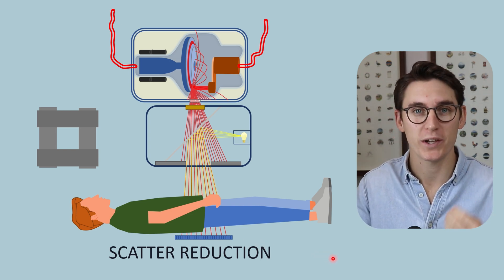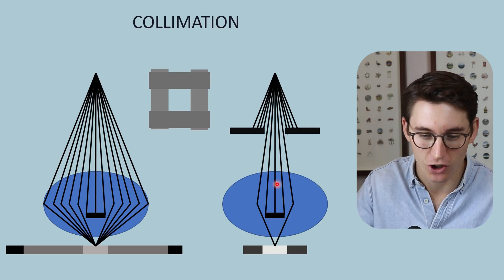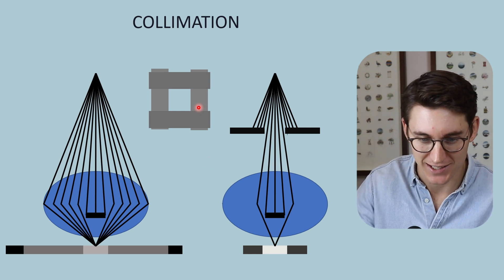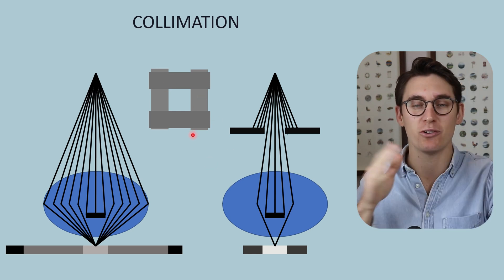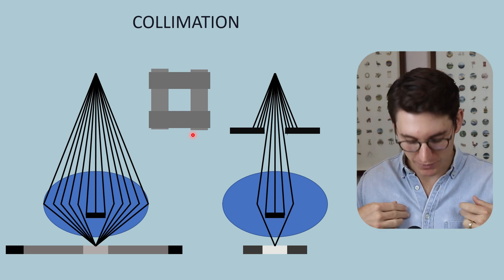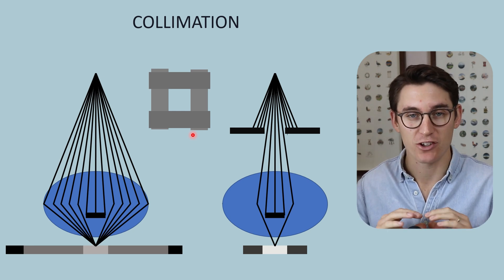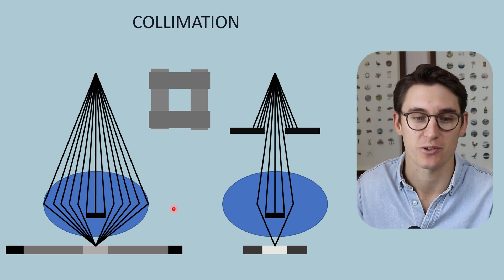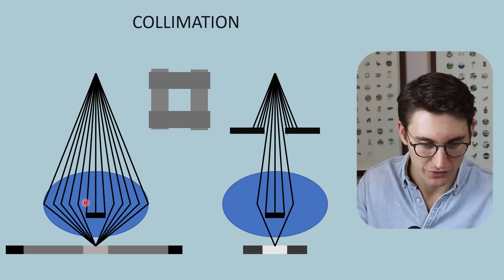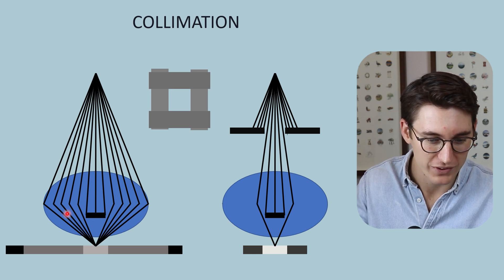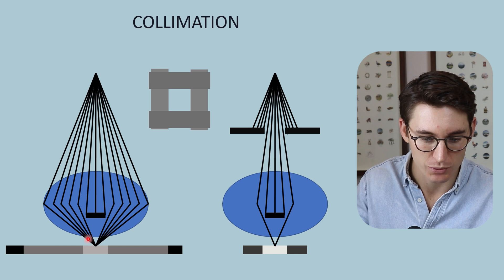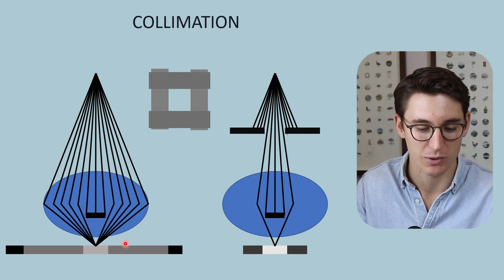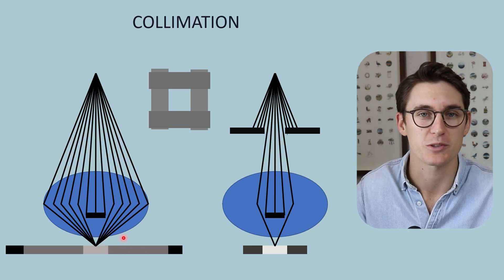Now the most important thing that we can do to reduce scatter is collimation. Remember collimation is using these shutters, these lead shields that narrow down our field of view. We can image just the part of the body that we want to image and not expose other areas of the patient to ionizing radiation. So if we are interested in just this part of the patient here, we have all of this tissue on the flanks of our patient contributing to scatter. They're decreasing contrast, increasing noise within the image, ultimately leading to poorer spatial resolution.